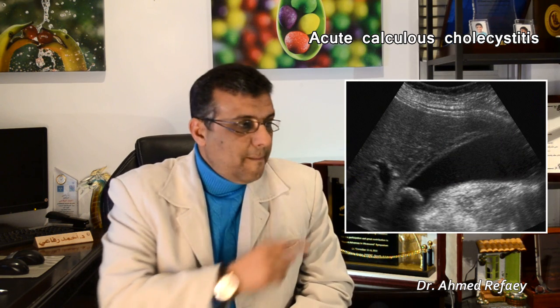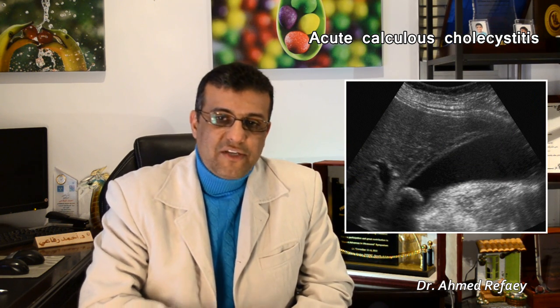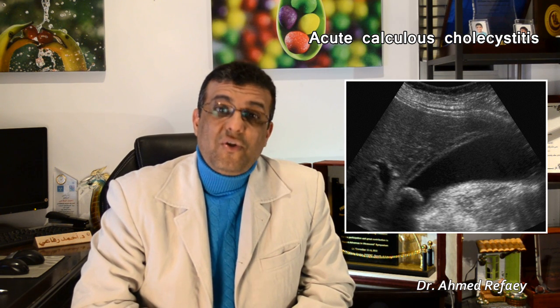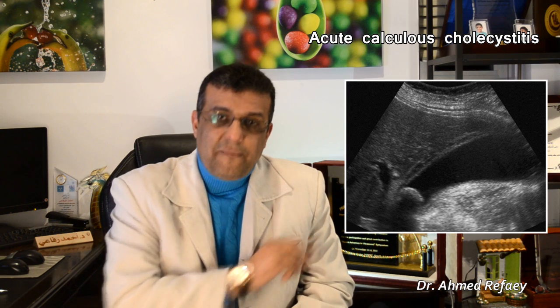Another example shows marked thickening of the gallbladder wall with a thin rim of pericholecystic fluid collection, as well as a large stone in the region of the neck reflecting marked posterior acoustic shadow, with some intraluminal biliary sludge. A further example also demonstrates marked thickened wall, a thin rim of pericholecystic fluid collection, and a large stone in the region of the neck of the gallbladder. These are examples of acute calcular cholecystitis.